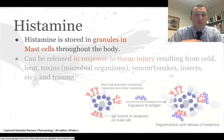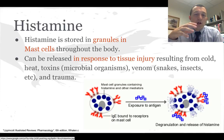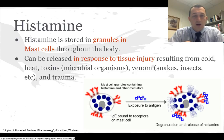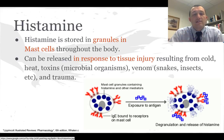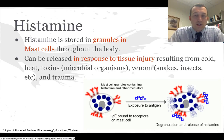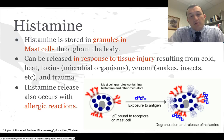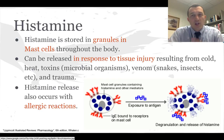Histamine can be released from mast cells when exposed to any number of stimulants: cold, heat, toxins including microbial organisms and their toxins. Even being bound by IgE as an antibody will trigger mast cells to release histamine. Venom, as we already talked about, and trauma can also result in release of histamine from mast cells. When we get an allergic reaction, this IgE-type antibody can bind to and activate those histamine-producing cells, which explains a lot of the symptoms you see with allergic reaction and anaphylaxis.